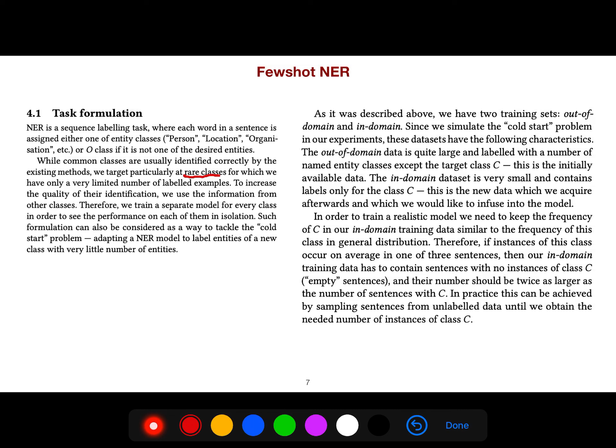The in-domain dataset is very small and contains labels only for class C. In order to train a realistic model, they need to keep the frequency of C in the in-domain training data similar to the frequency of this class in the general distribution. So if instances of this class occur on average in one of three sentences, then the in-domain training data has to contain sentences with no instances of class C, and their numbers should be twice as large as the number of sentences with C.